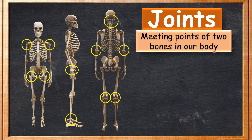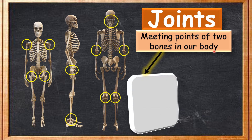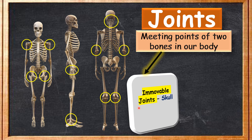In simple language, a joint is the meeting point of two bones in our body. These joints are divided into two categories: immovable joints and movable joints. Immovable joints are joints that cannot move.